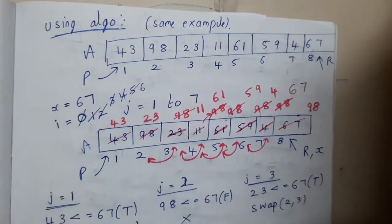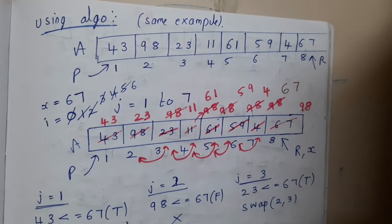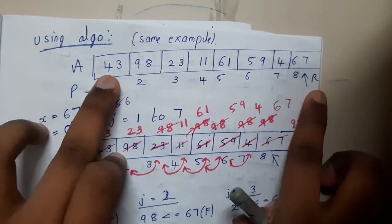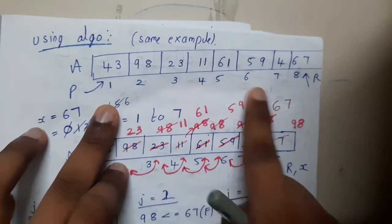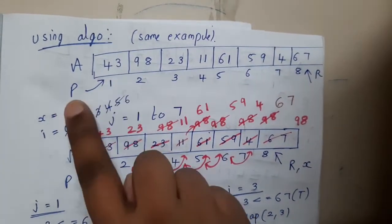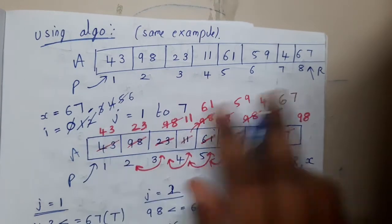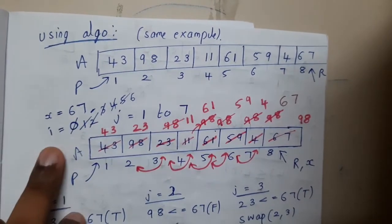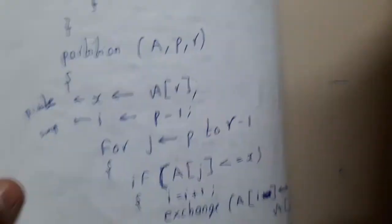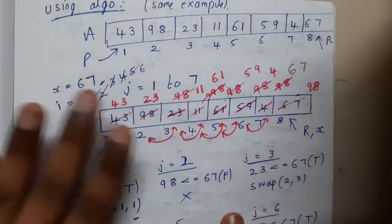Using the algorithm on the same example we did before — previously I compared it like a normal human would, but a computer doesn't think like that; it just follows the steps you give. Here we have an array: 43, 98, 23, 11, 61, 59, 4, and 67 — elements 1 to 8. The first element is considered as p and the last element as r.